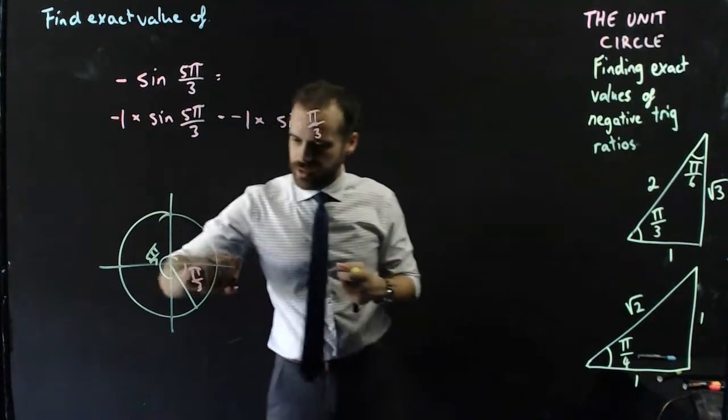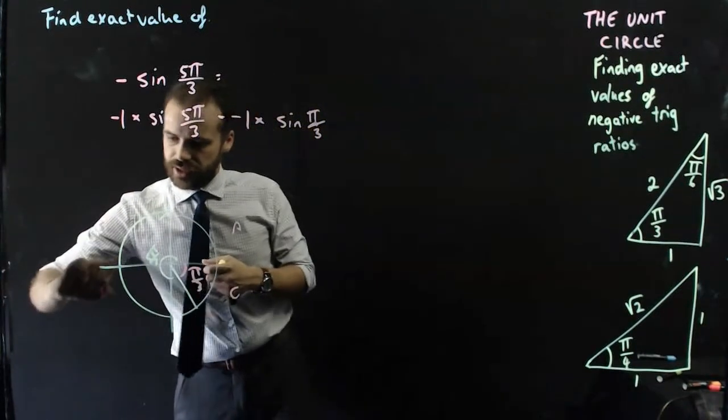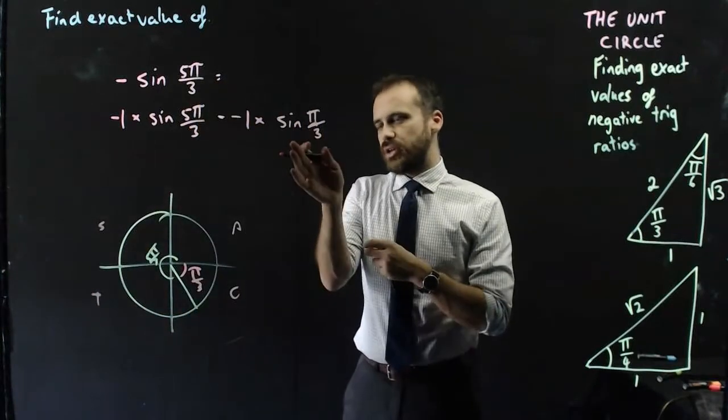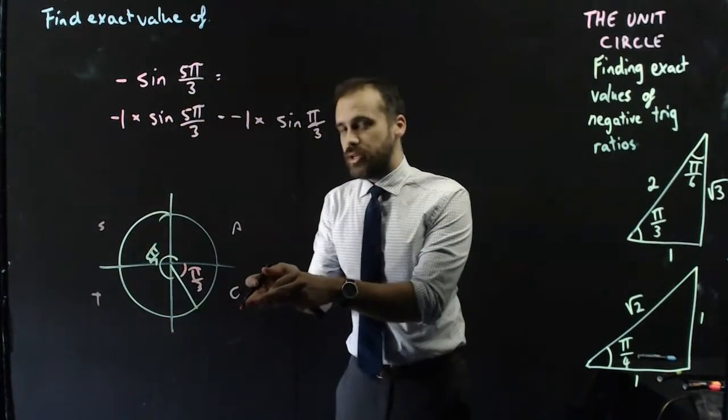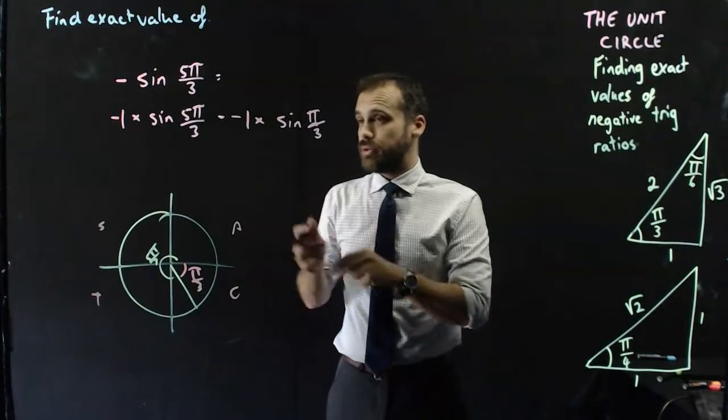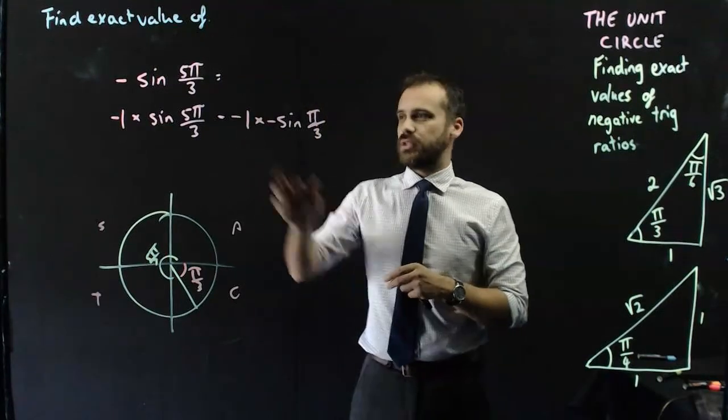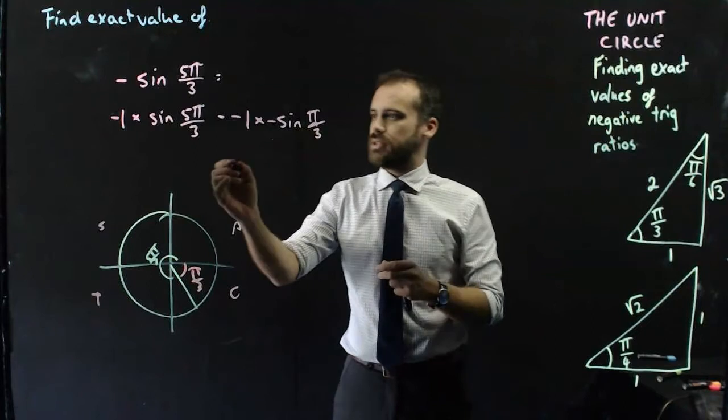But wait a minute, it's a sine ratio in the C quadrant. So it's not going to be sine π/3, it's going to be negative sine π/3. So I've got this negative 1 times a negative whatever that's going to be.